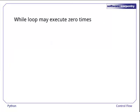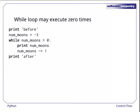A while loop may execute any number of times, including zero. Here, for example, nummoons is initially minus 3, so the loop condition is false the first time it is tested, and the loop body doesn't execute at all. The output is therefore the two lines before and after, with nothing in between.